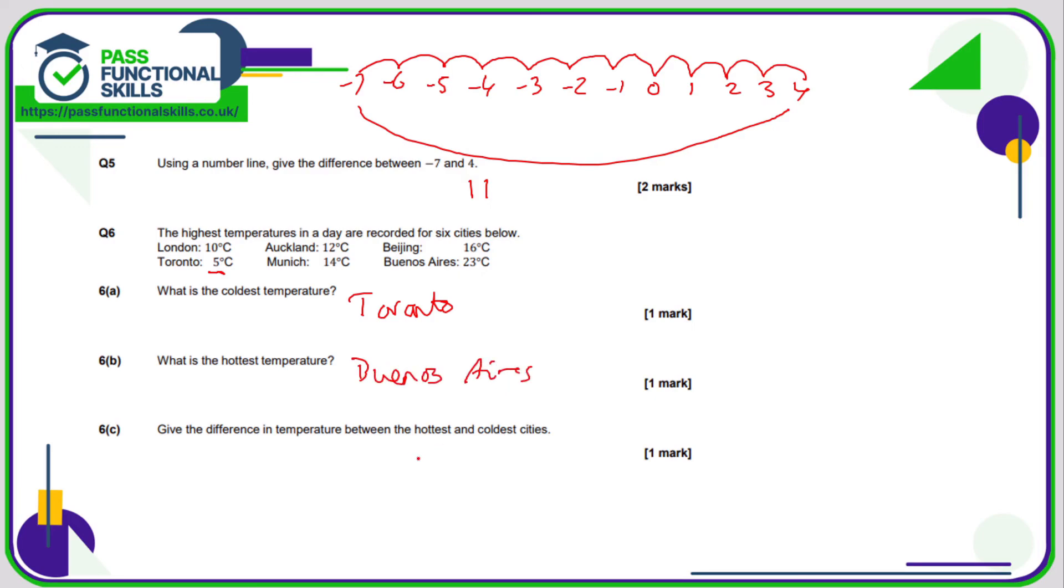The difference between the hottest and the coldest is the difference between 23 and 5, and 23 minus 5 is 18, so that's a difference of 18 degrees.